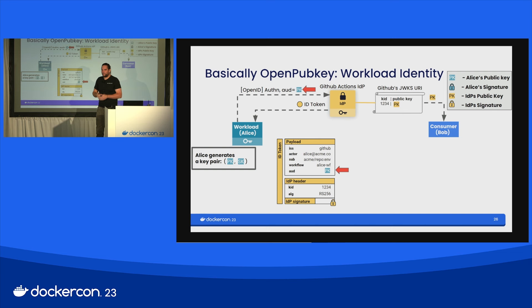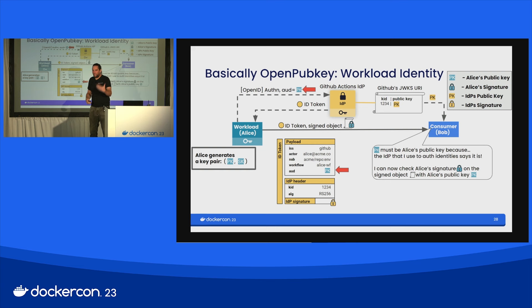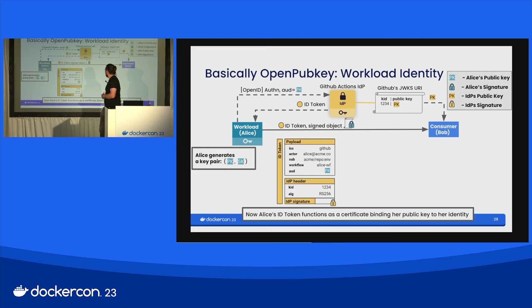Alice can now sign objects. If she publishes her ID token along with the signed object, Bob can check that the object is signed under Alice's identity, because the IDP has attested to the public key used by Alice. Notice that in some sense the ID token is functioning like a certificate issued by a certificate authority, binding identity to a public key — but we haven't added a certificate authority here. It's just the regular old IDP that you've used before.